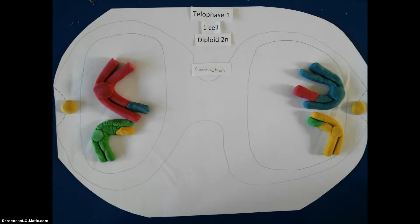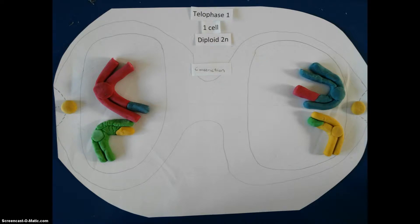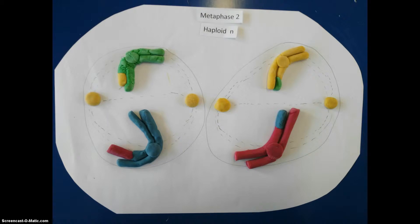Each cell formed during meiosis 1 will now divide again in much the same way. In prophase 2, a spindle forms in each of the new cells. In metaphase 2, individual chromosomes line up the equator of each cell again with the centromeres attached to the spindle fibers.